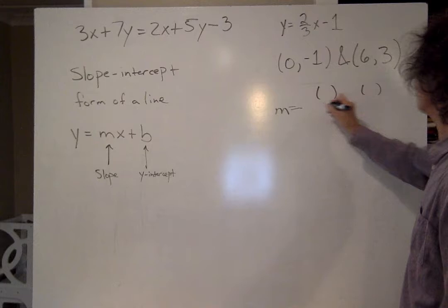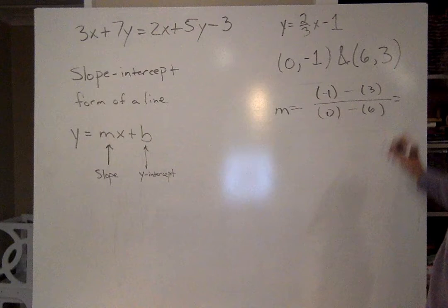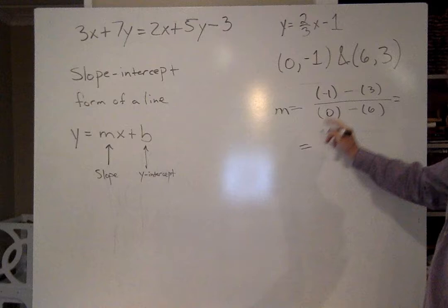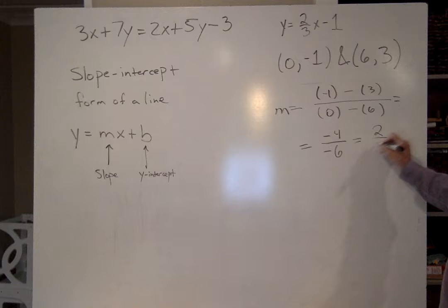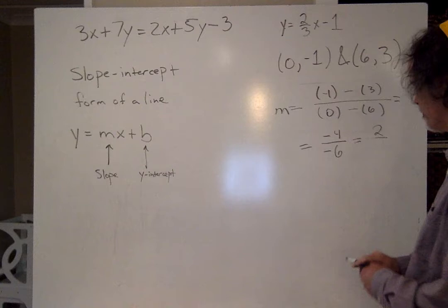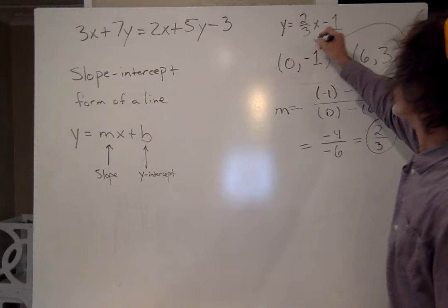Now, to find a slope, I do this thing where I do parentheses, parentheses, parentheses, parentheses, minus, minus, x, y, x, y, which is minus 1 minus 3 is minus 4 over minus 6. Minus over minus is plus 4 over 6, reduces to 2/3. 2/3 look familiar? It's the same number. And it turns out this is always the case.